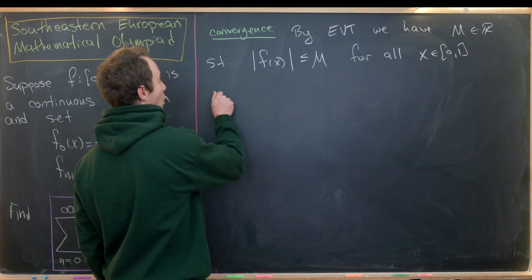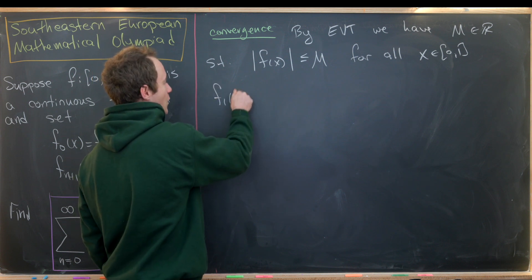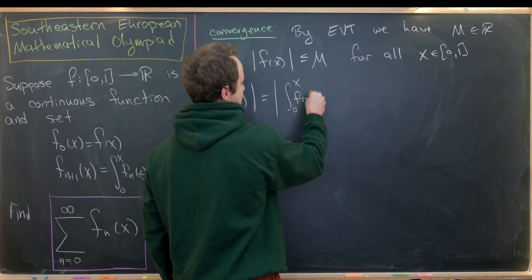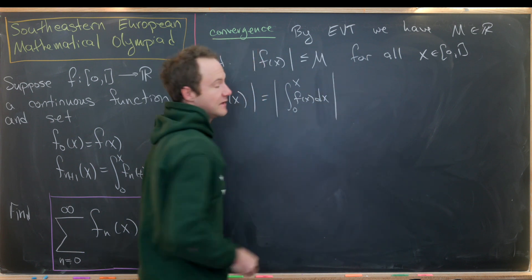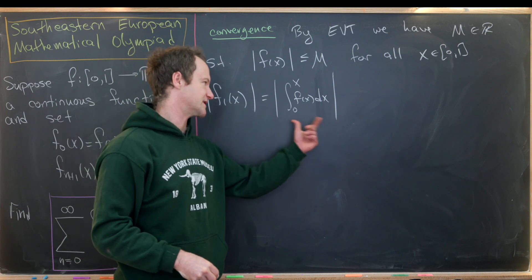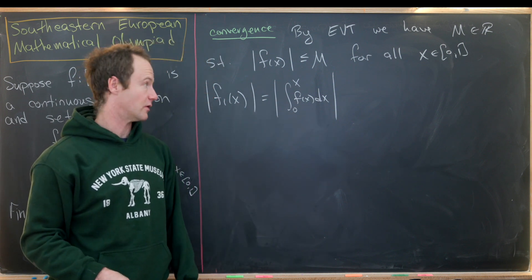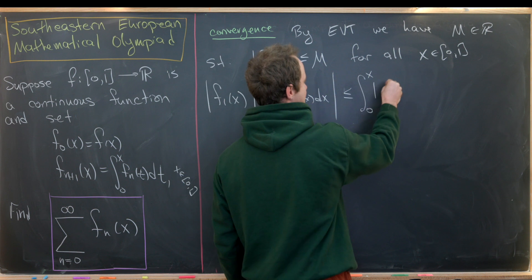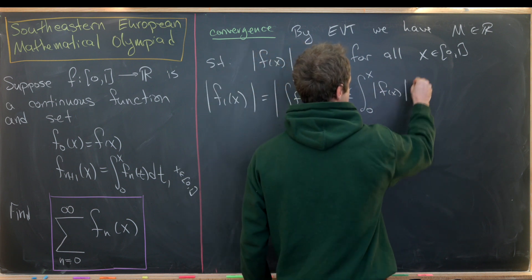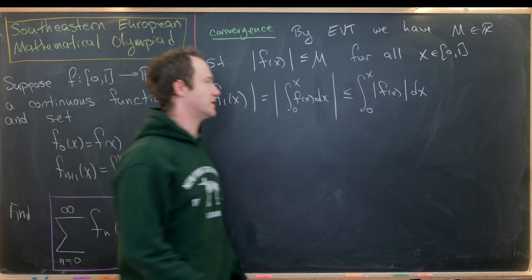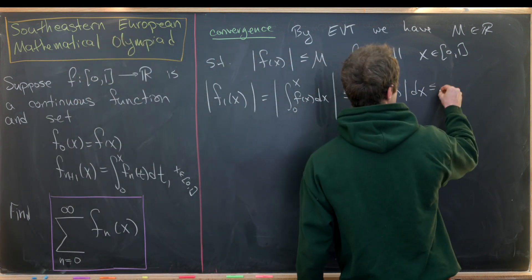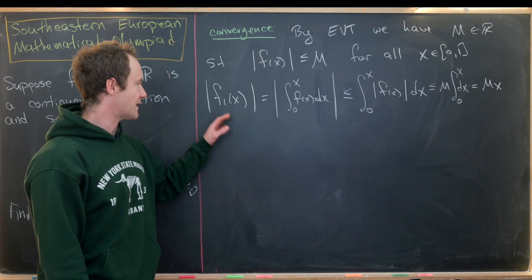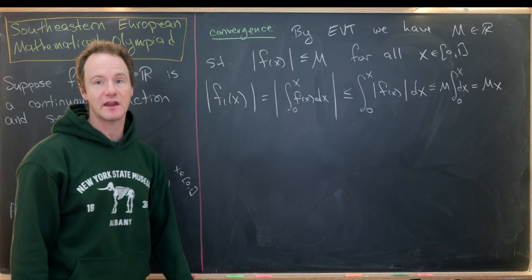Let's explore f₁. We have |f₁(x)| = |∫₀ˣ f(t) dt| ≤ ∫₀ˣ |f(t)| dt by the triangle inequality. Since |f(t)| ≤ M, this is less than or equal to M times the integral from 0 to x dt, which is M·x. So f₁ is bounded above by the linear function M·x.